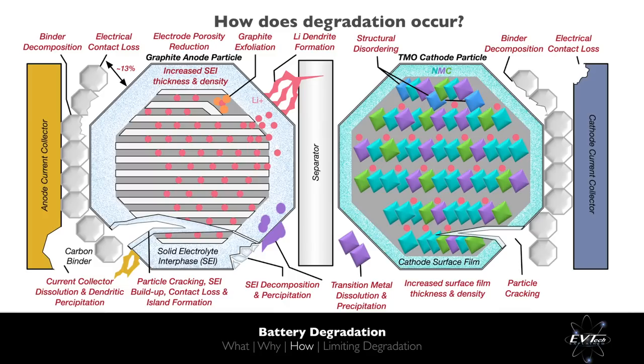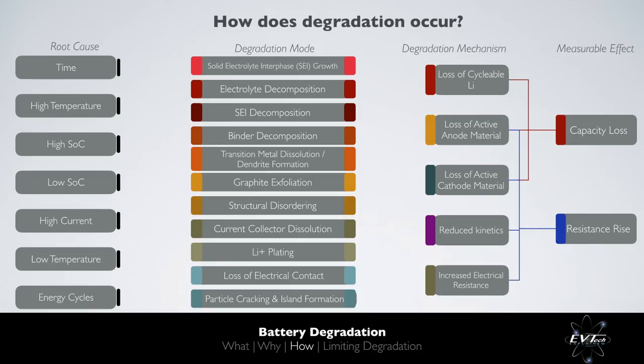From this figure, given the number of different degradation mechanisms shown, it is evident why battery degradation is a complex and not fully understood process. Returning to our degradation map, we can now align different degradation root causes with different degradation modes, and different degradation modes with different degradation mechanisms.